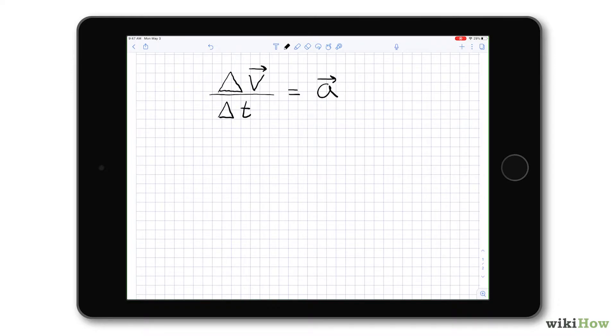Anytime your velocity is changing, you are accelerating. The first thing to notice are those arrows above the V and the A. Both acceleration and velocity are vector quantities, and what that means is there's a magnitude and a direction that comes with each.